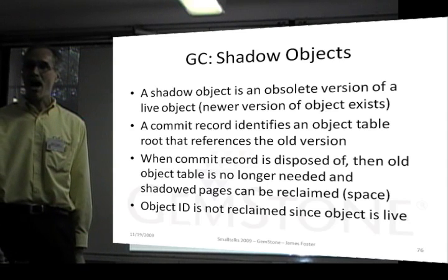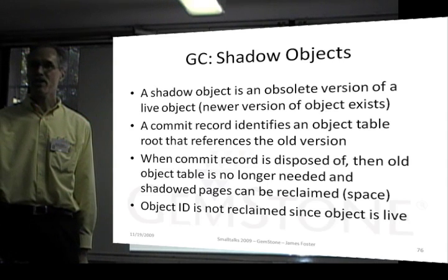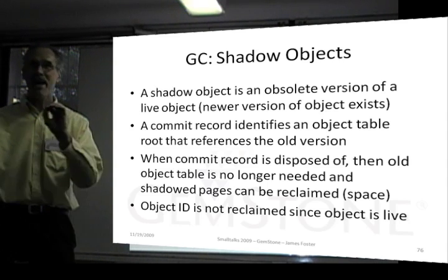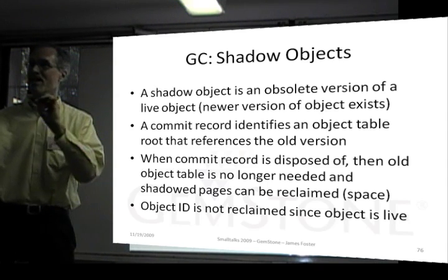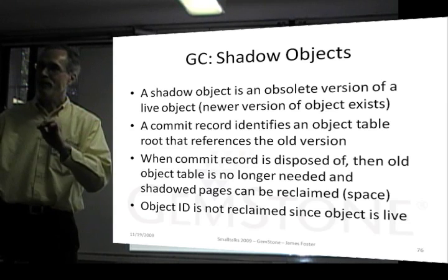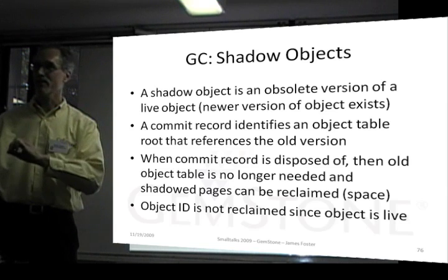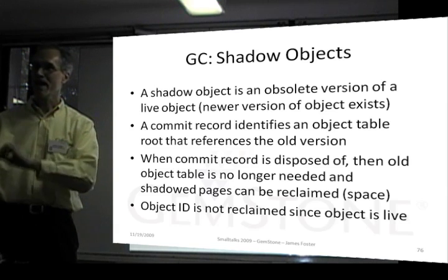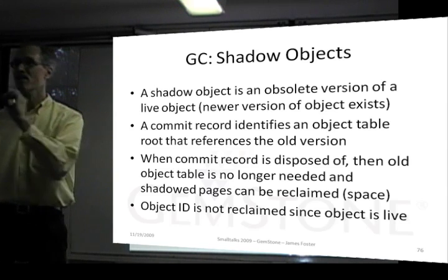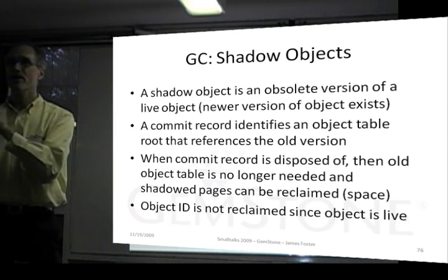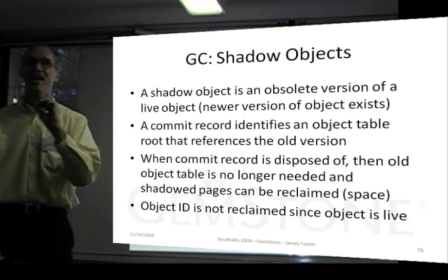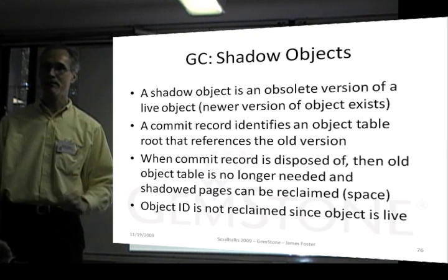A shadow object is an obsolete version of a live object. An object can be referenced, but a new version of it is referenced. So a shadow object is an old version of a live object.